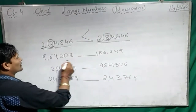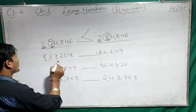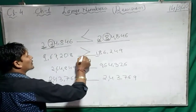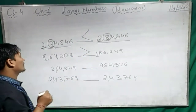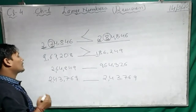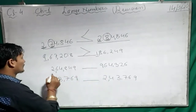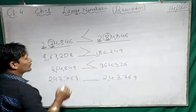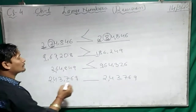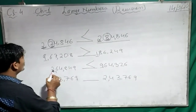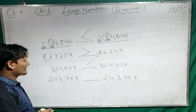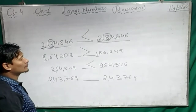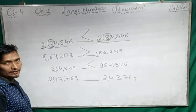Here also 6 digits on both sides. See the first digit: 9 and this is 1. Which one is bigger? 9. So the open mouth goes towards the bigger number. Next example — also 6 digits on both sides. First digit is 2 and this is 9. Open mouth towards 9. So we read: 2,64,849 is smaller than 9,64,326.